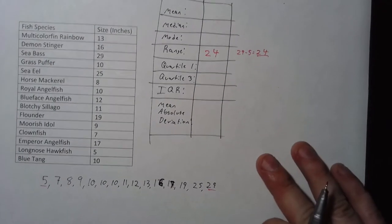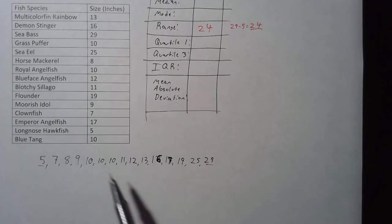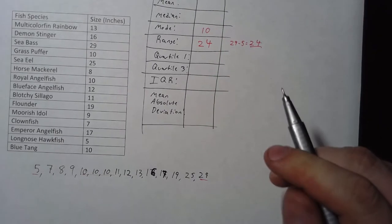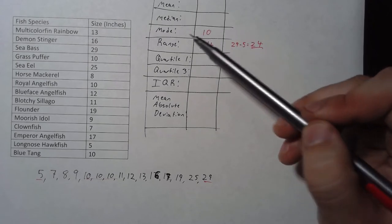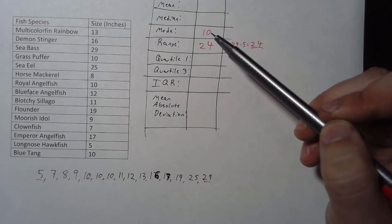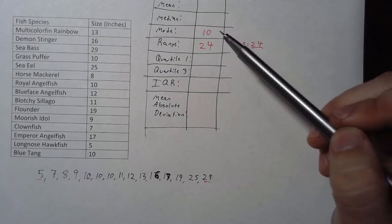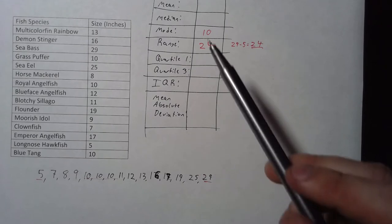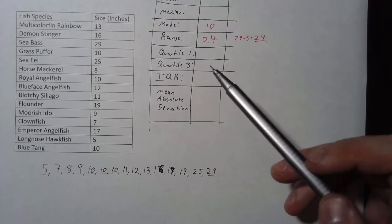Next up, we can identify the mode. Any number that repeats more than anything else. 10 repeats 3 times. No other number does that. So the mode is 10. Something you should know, mode is the only one of these that can have either more than one answer or no answer at all. So you can have multiple modes. If there were, say, three 10s and three 13s, then our answer would be 10 and 13.